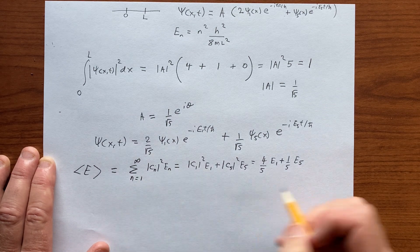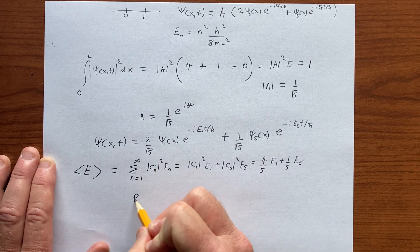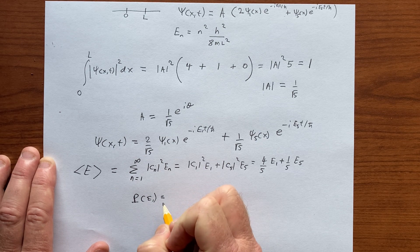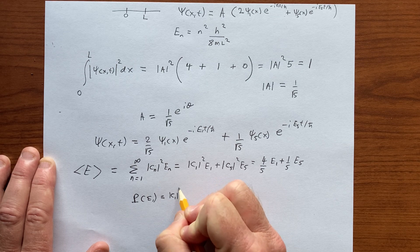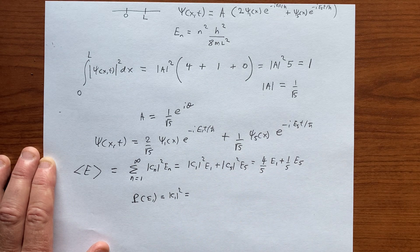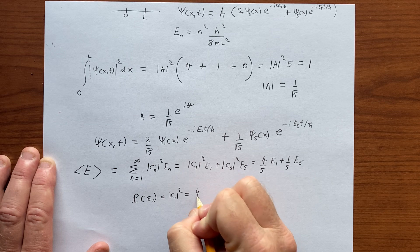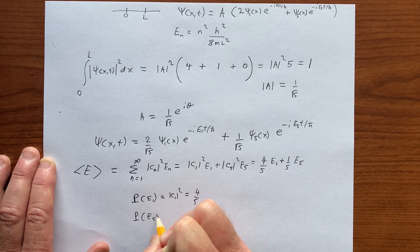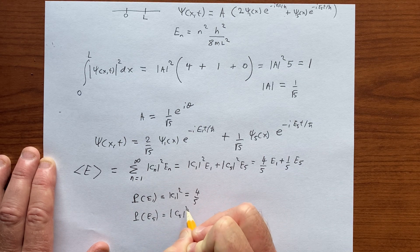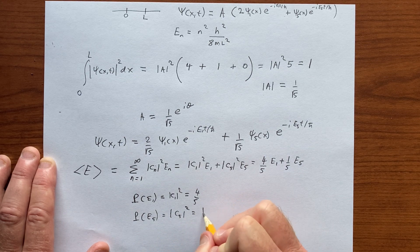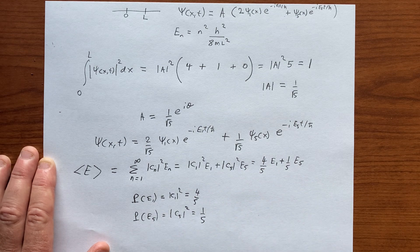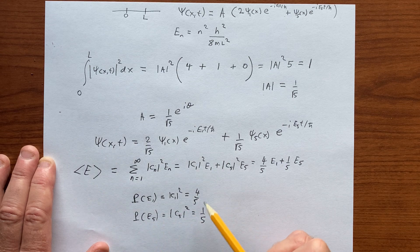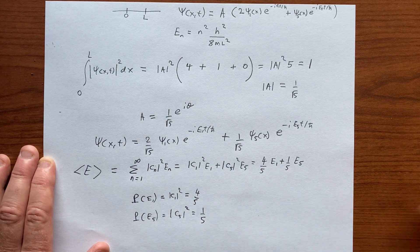Let's say we ask for the probability of finding, the probability that in a measurement we'll get E1. That's going to be just c1 modulus squared, which is 4 fifths. And if we look for the probability of measuring E5, that's equal to c5 modulus squared, which is equal to 1 fifth. And notice that these quantities are time independent.